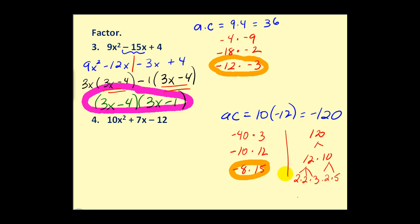Let's rewrite this as four terms so we can use grouping. We'll have 10x². Instead of 7x, we will use these two factors to write it as -8x + 15x - 12.